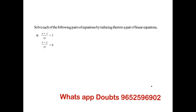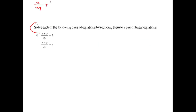For the next sum, looking at equation 1, I can rewrite it as x by xy plus y by xy equals 2. The y terms cancel in the first fraction and the x terms cancel in the second, leaving 1 by y plus 1 by x equals 2. Let this be equation number 1.